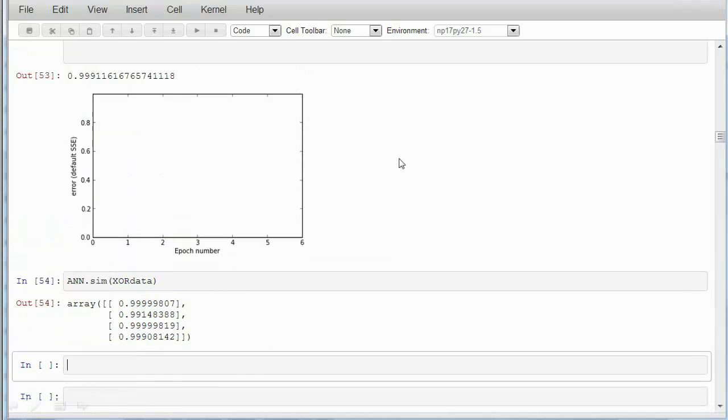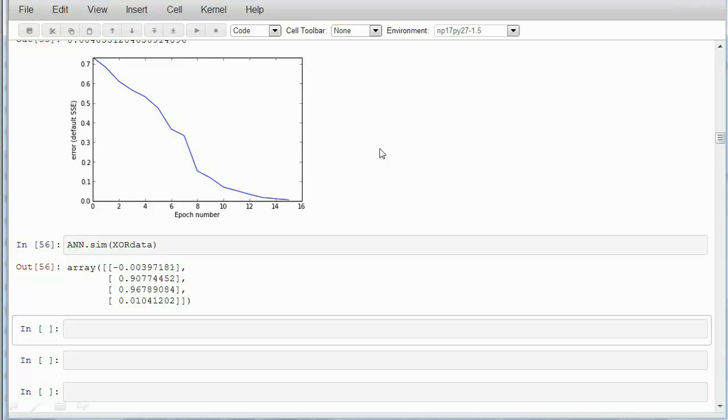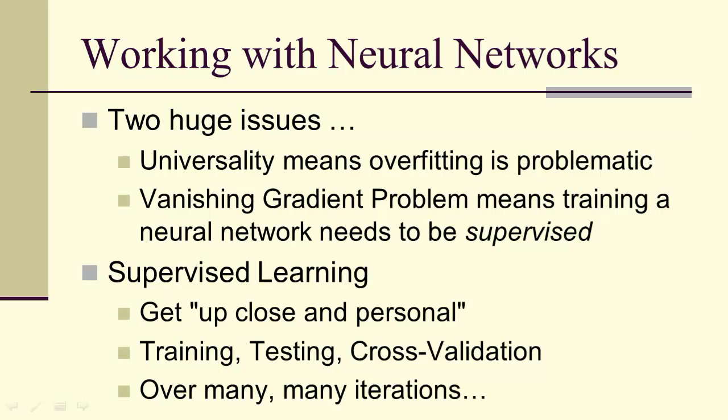Now, we might wonder, well, could we fix this perhaps by using multiple layers? This idea that it converges about every other time to the right answer. So neural networks are wrong about half the time, it looks like. And that in some sense is true. But adding more layers doesn't actually help, as we'll see later. So when you're working with neural networks, there's two huge issues. Universality means overfitting is a problem. The vanishing gradient means training a neural network has to be supervised. So what do we mean by supervised learning? I mean, you have to get up close and personal. You really have to be hands-on when you use neural networks. A lot of training, a lot of testing, a lot of cross-validation over many, many iterations.